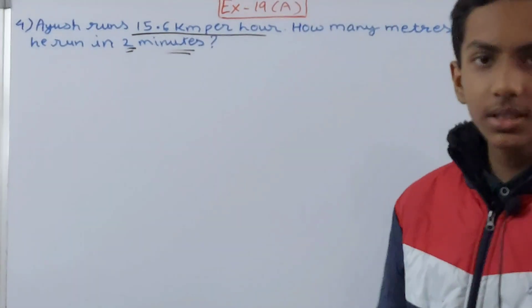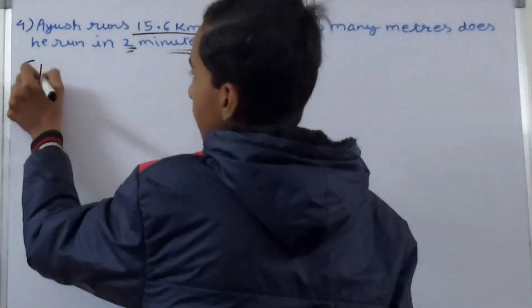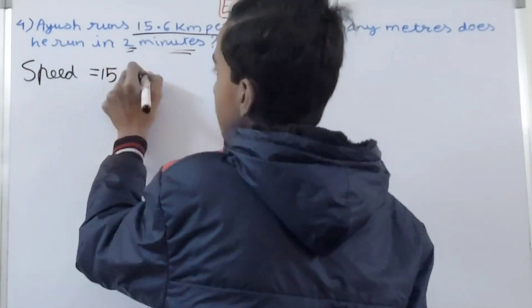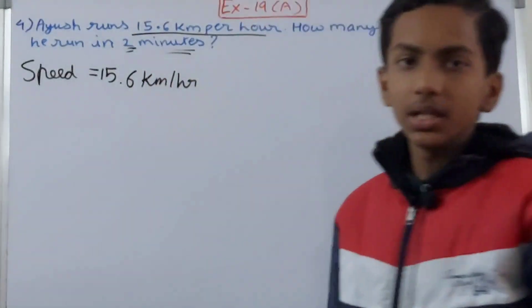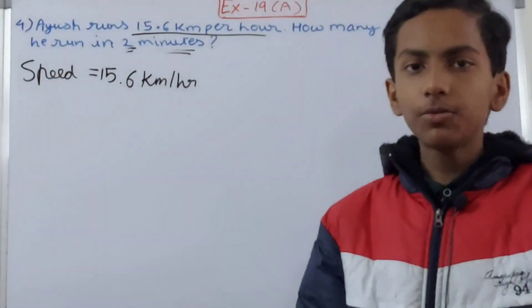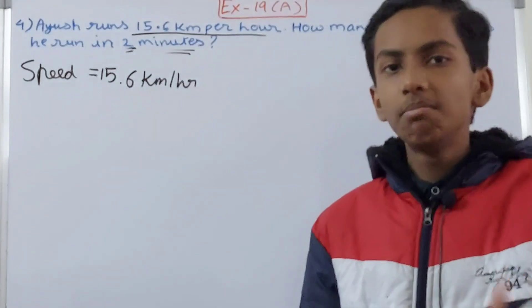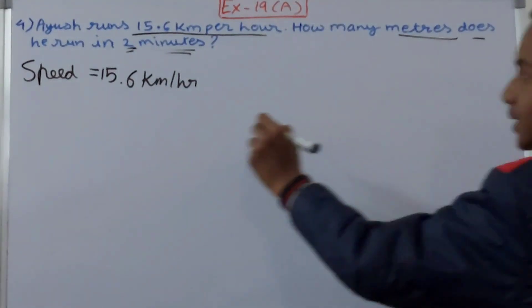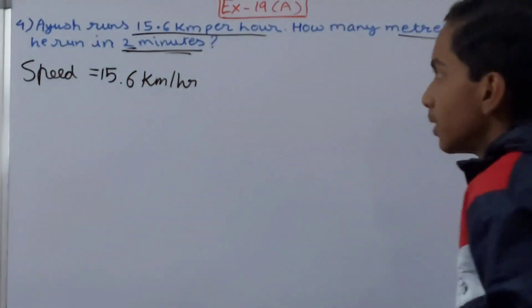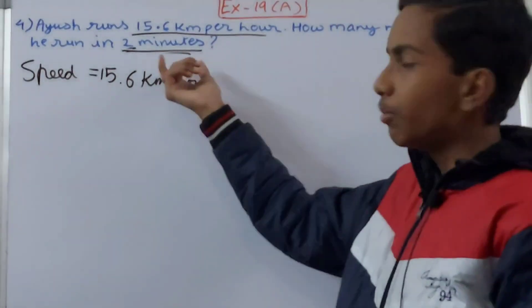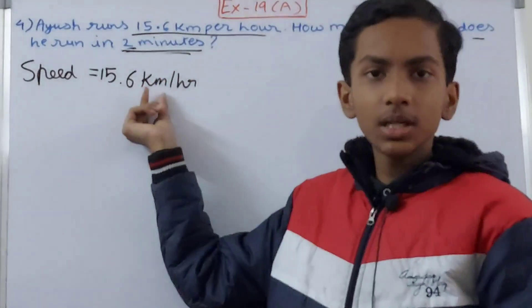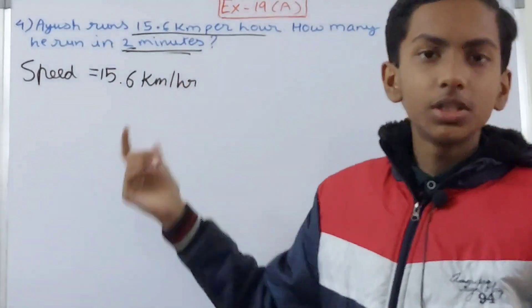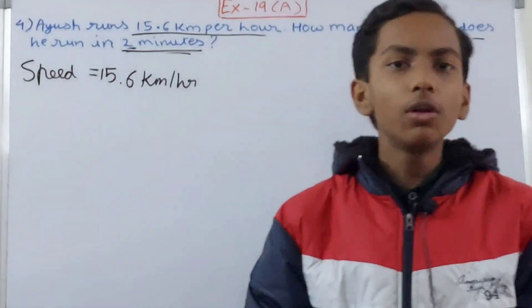First of all, see that 15.6 kilometers is the speed. The speed is 15.6 kilometers per hour. Now we have to first of all convert this into minutes, because it is asking how many meters does he run in two minutes. Meters it is asking, and in two minutes. Kilometer is here, kilometer will become meters, but hour cannot become minutes directly.